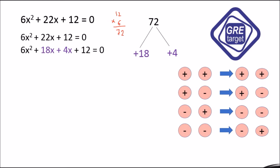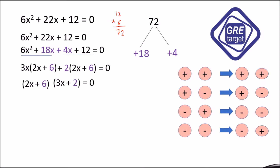Now take the common from the first two terms — the common is 3x — so we get 3x(2x + 6). From the last two terms, take the common 2, giving 2(2x + 6) = 0. Now 2x + 6 is common in both, and the remaining terms give (2x + 6)(3x + 2) = 0.